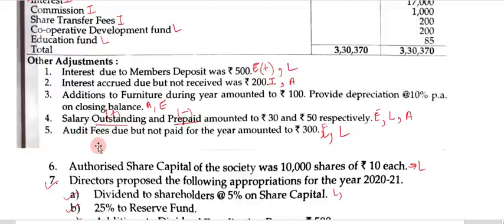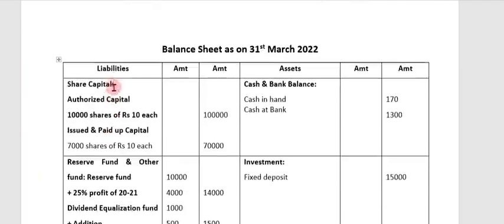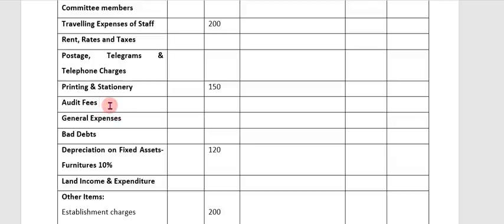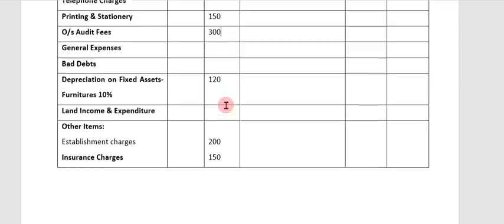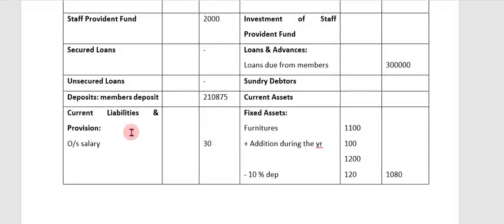Adjustment 5: audit fees due but not paid Rs. 300. First effect — in the expenditure side of the profit and loss account under 'audit fees': outstanding audit fees Rs. 300. Second effect — in the liability side under 'current liabilities and provisions': outstanding audit fees Rs. 300.